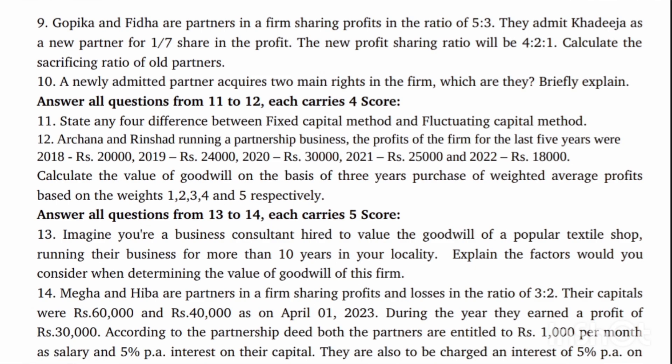Twelfth question: Archana and Rinsha are running a partnership business. We calculate the goodwill based on the weighted average profit method. Normally, if weighted average amounts are given, we use the weighted average profit method; otherwise, we use the simple average profit method. Superprofit method is also easy. I will cover this in a separate video. If you like this video, please watch more videos.